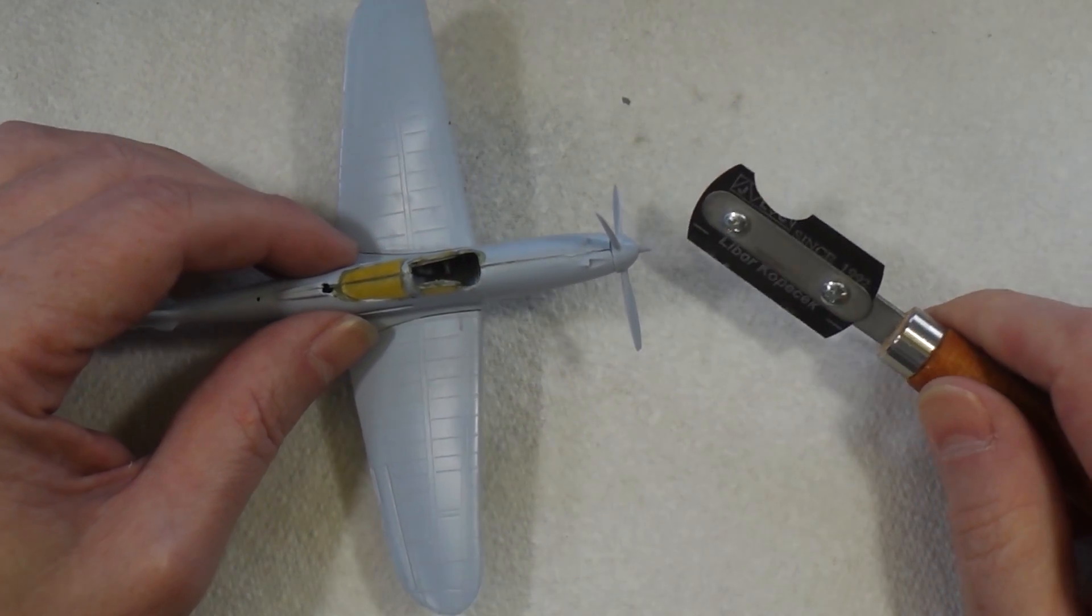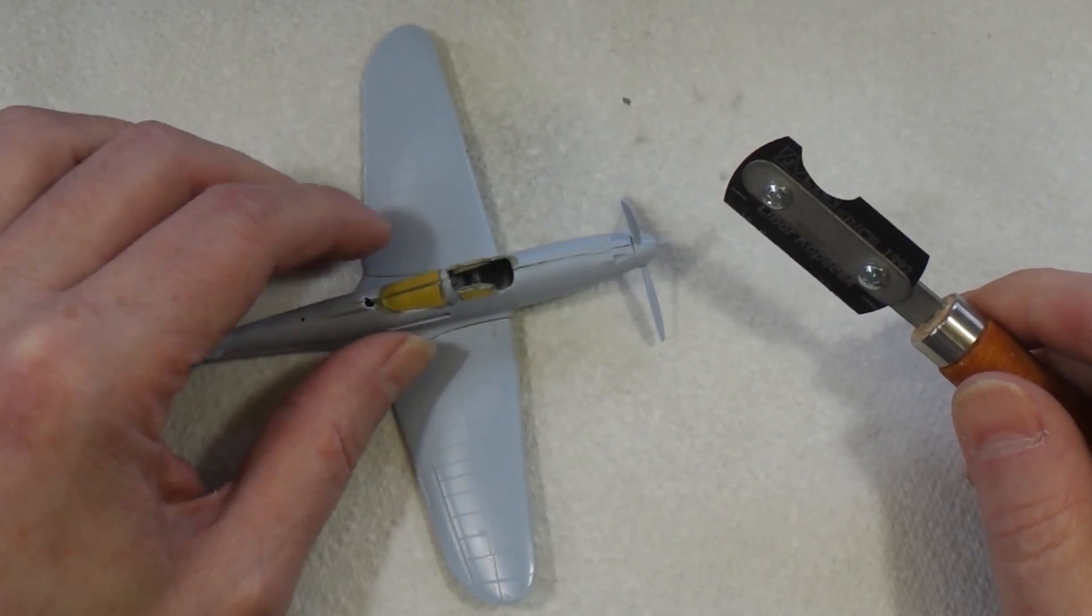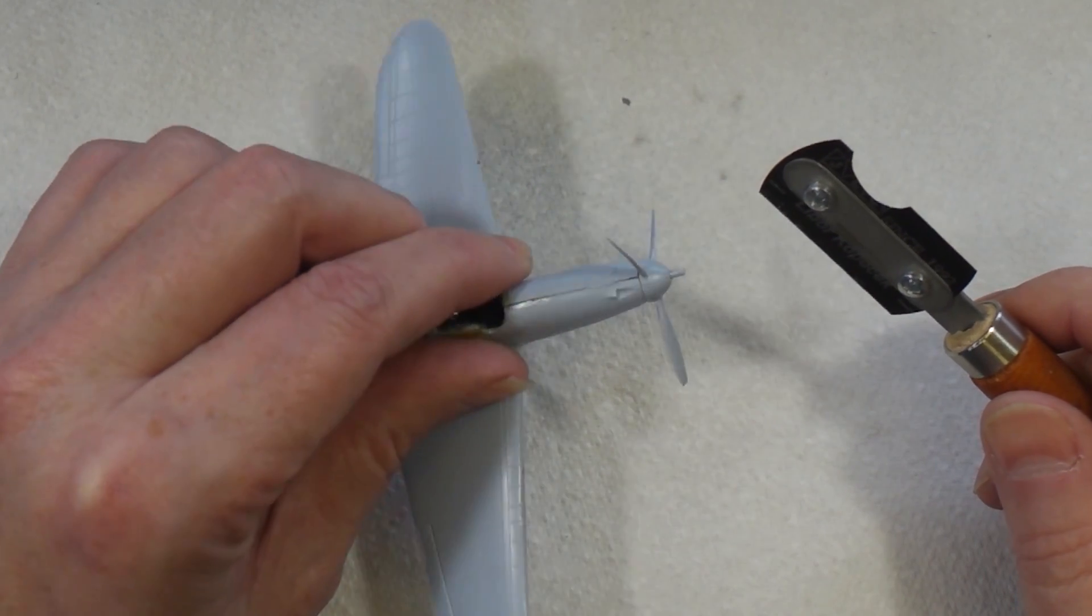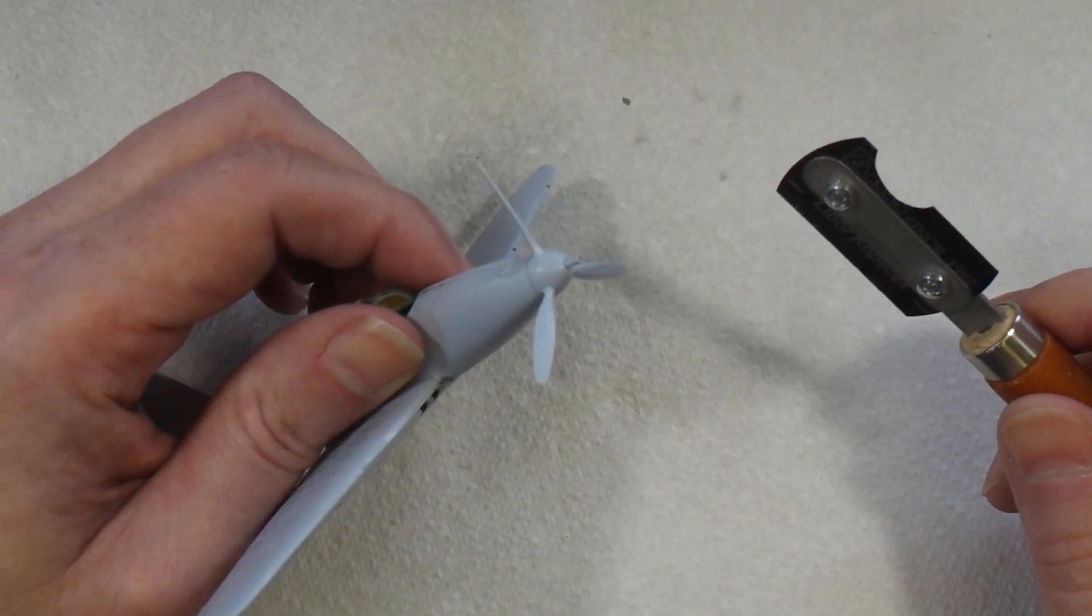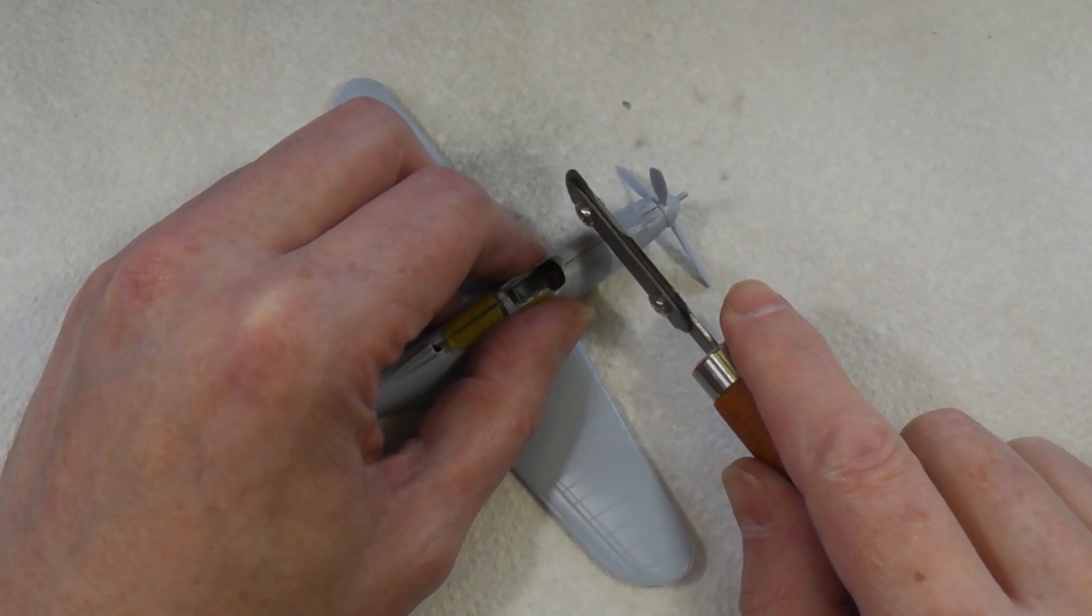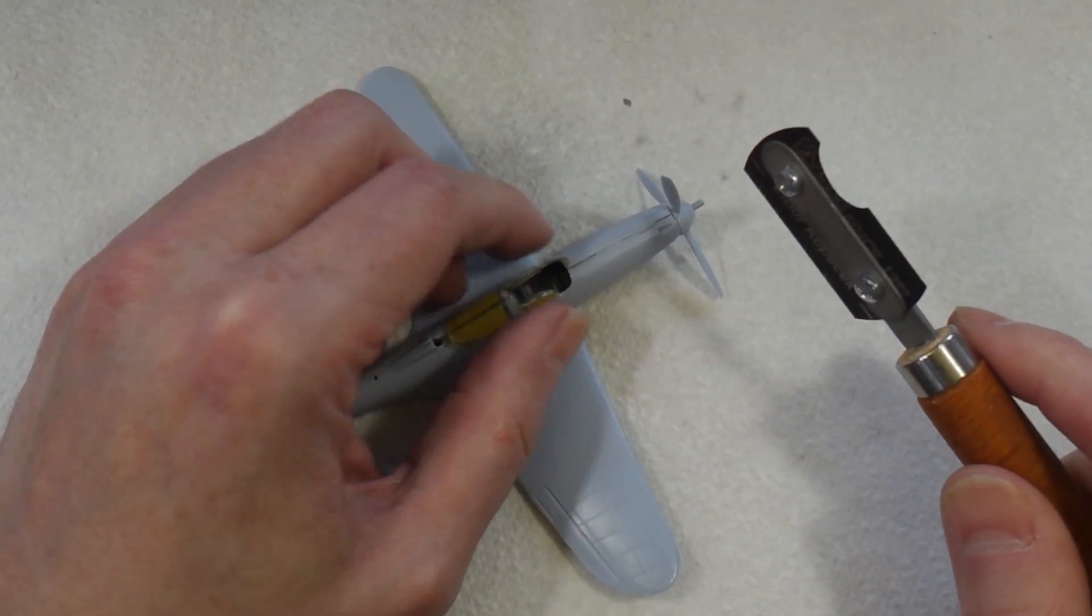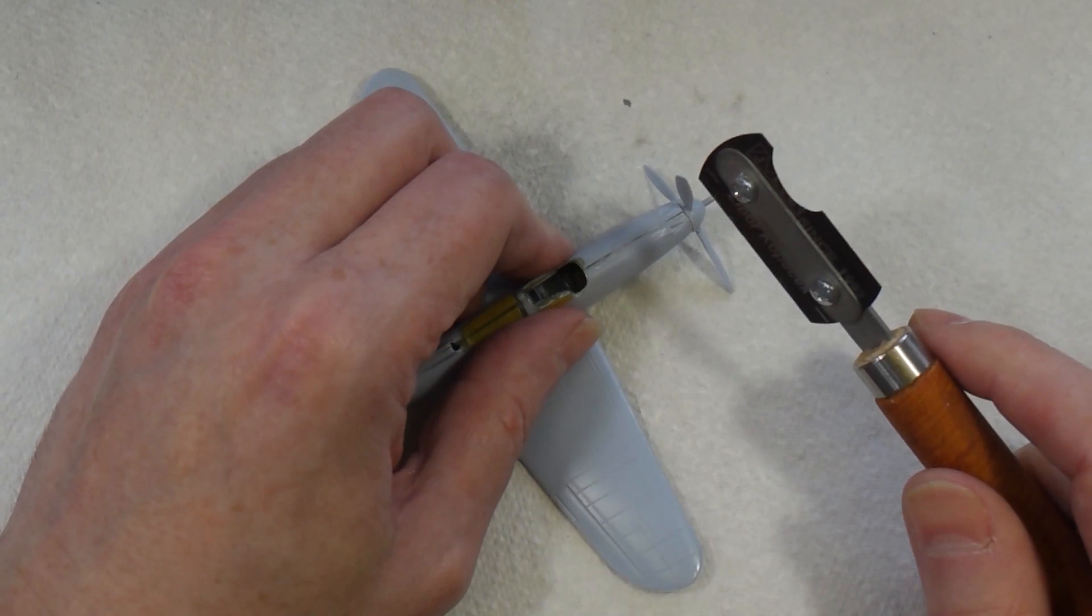So let's do that. I think the easiest way to cut this off is I'll use a razor saw. I'm just trying to think the best way to do it without breaking it.